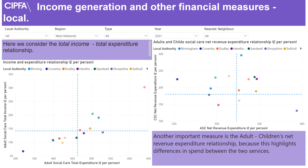This slide shows the income spend relationships and spend relationships between adults and children's social care services. Again the dashed lines represent the average of each of the authorities selected, so visually you'll see the authorities that are performing better or worse than average at generating income or spending money.